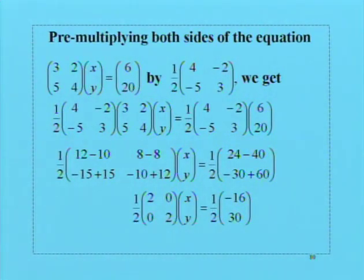The next step is to pre-multiply both sides of the equation by the inverse. The equation in matrix form (3, 2, 5, 4) times (x, y) = (6, 20) is multiplied by the inverse, which is 1/2 times the matrix (4, -2, -5, 3).